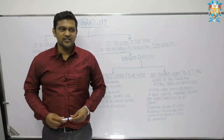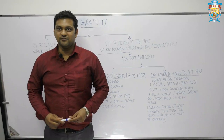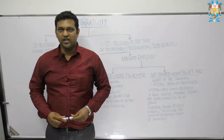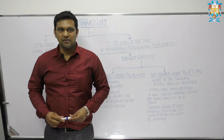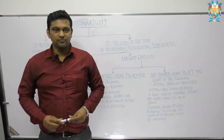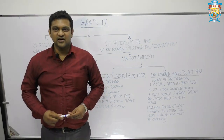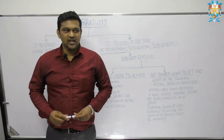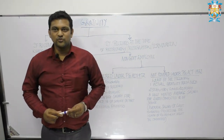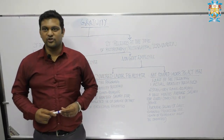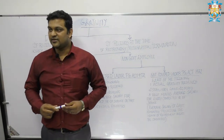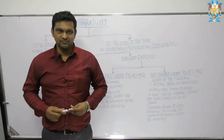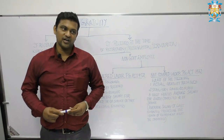Gratuity under Section 10, subsection 10, is the amount paid by the employer to his employee on his retirement for leaving the job as a gratitude. In simple words, we are saying thank you in monetary terms for the valuable service rendered in the organization by him or her.